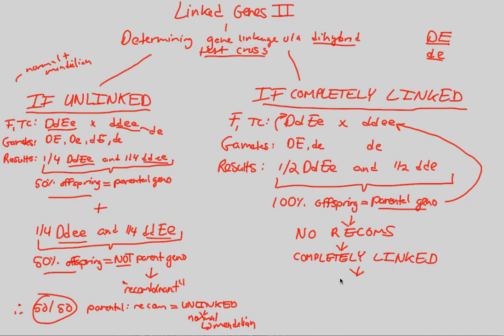Thus, it is considered a non-Mendelian result, a result that violates Mendel's second law of independent assortment. So this is how you would figure out whether or not a gene is unlinked or linked. These are the results you would expect from both situations: 50-50 versus 100. We always look back at where did the parental genotype go, how much of it was conserved.